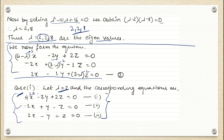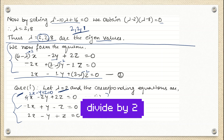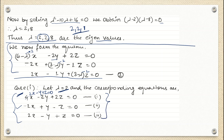If you look carefully, all three equations are actually the same: 2x minus y plus z equals 0. Dividing the first by 2 and the second by -1 both give 2x minus y plus z equals 0. Since I have three unknowns x, y, z, I need three different equations — but I have only one equation. So we need a different approach.